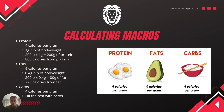So if you weigh 200 pounds, that's 200 grams of protein. If you weigh 150 pounds, it's 150 grams of protein. Because protein has 4 calories per gram, we multiply 4 by 200 grams, giving us 800 calories total coming from protein. Super simple — one gram per pound of body weight.